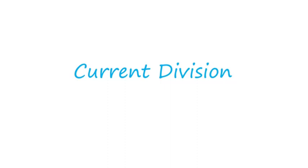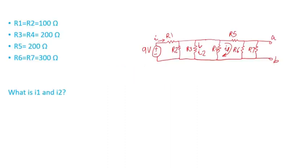In this video I'll go through a quick example on how to use current division. Here's a simple resistive circuit example — we have a 9 volt DC source and we have the current that flows through this circuit.